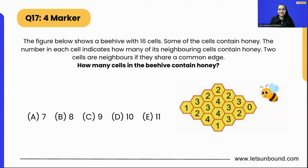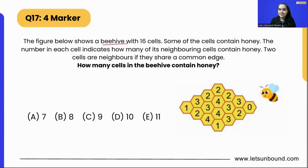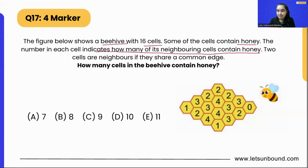Hello everyone! In today's video we are going to discuss the 17th question that came as a 4-marker for grades 5 and 6. It's a very interesting and easy question. The question is: the figure below shows a beehive with 16 cells. Some of the cells contain honey. The number in each cell indicates how many of the neighboring cells contain honey. Two cells are neighbors if they share a common edge. How many cells in the beehive contain honey?